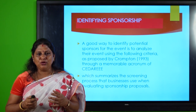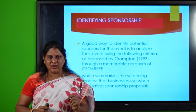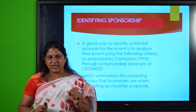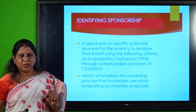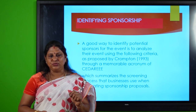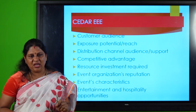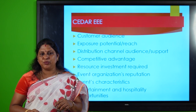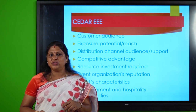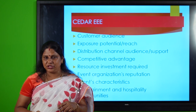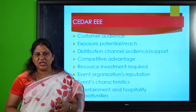A good way to identify potential sponsors for events is to analyze your event using the criteria proposed by Crompton in the year 1993 through the memorable acronym SIDAR-EEE, which summarizes the screening process that businesses use when evaluating sponsorship proposals. SIDAR-EEE stands for: Customer audience, Exposure potential or reach, Distribution channel audience support, Competitive advantage, Resource investment required, Event organization reputation, Events characteristics, and Entertainment and hospitality opportunities.